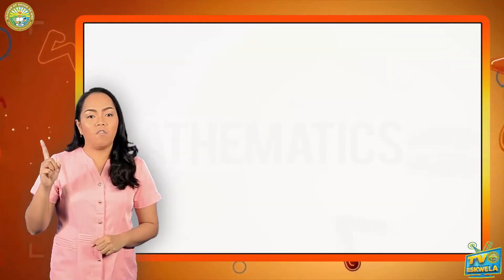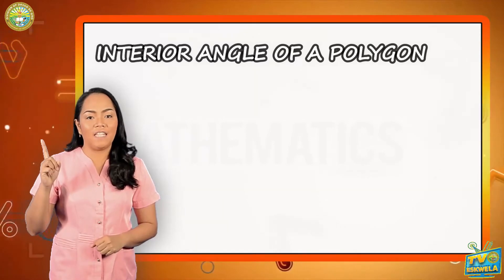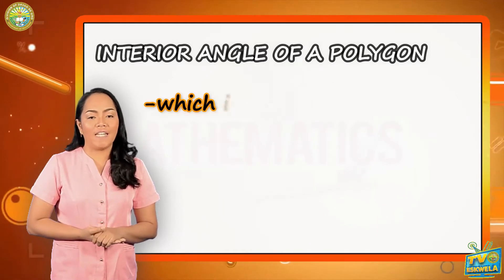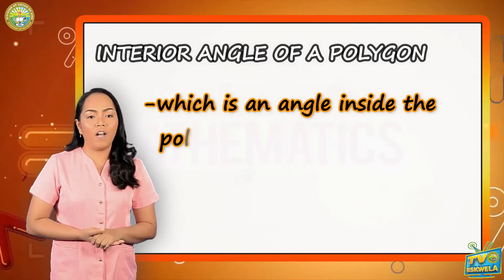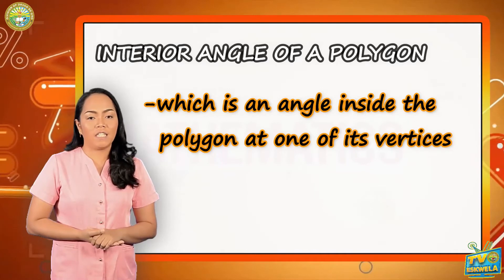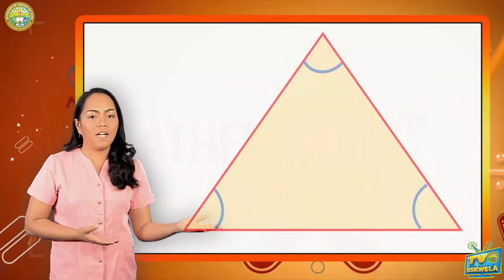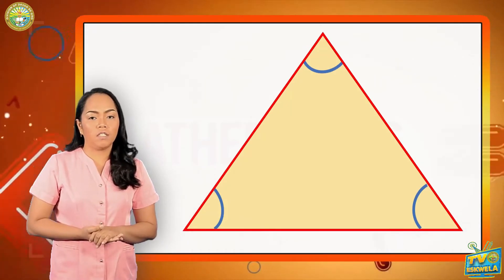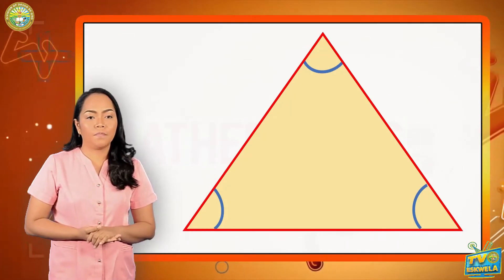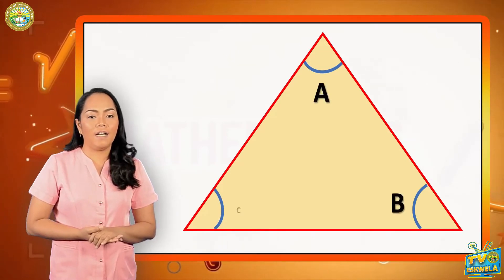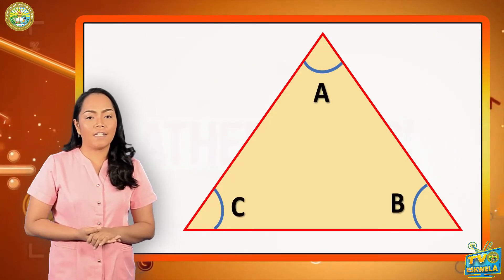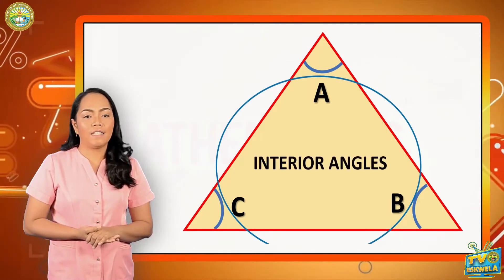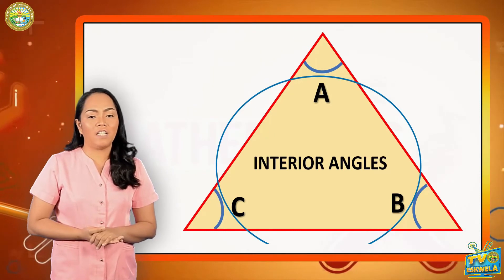The first keyword is an interior angle of a polygon, which is an angle inside the polygon at one of its vertices. Consider the given figure. From the illustration, angle A, angle B, and angle C are the interior angles of triangle ABC, since the angles are located inside the triangle.